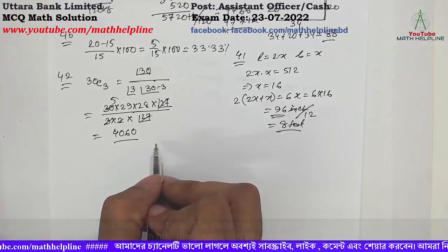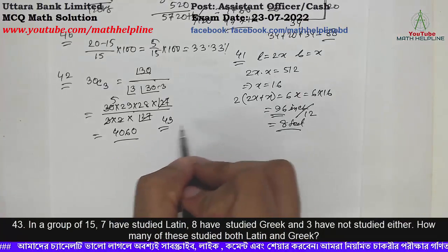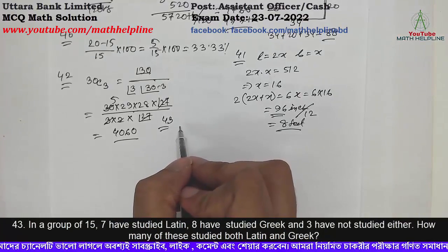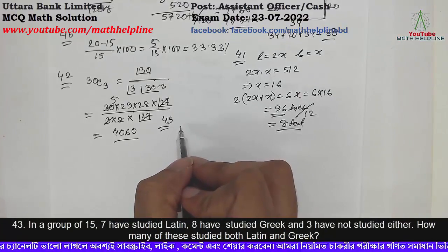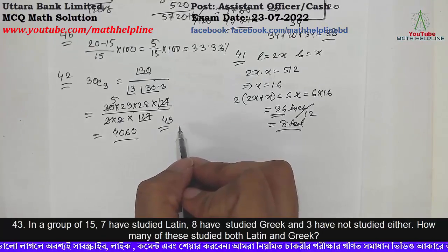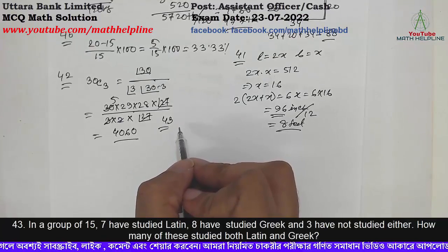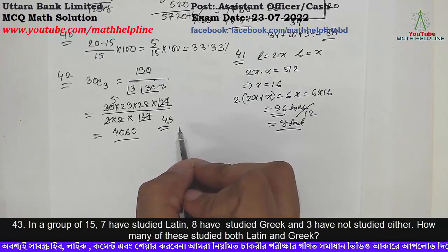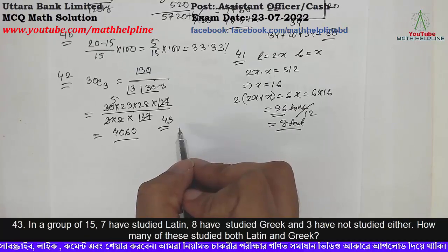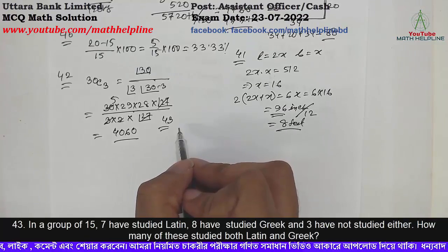Problem number 43: In a group of 15, 7 have studied Latin, 8 have studied Greek, and 3 have not studied either. How many of these studied both Latin and Greek?